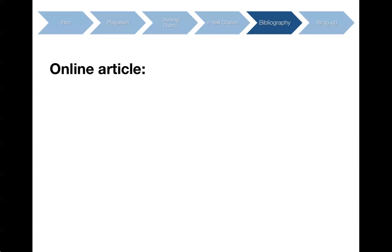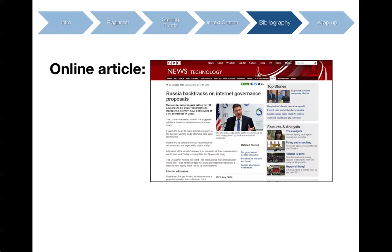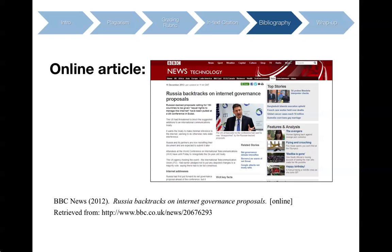Now let's look at online articles — this can be a news item, an op-ed, or an essay. Start with the name of the news organization, followed by the year the article was published in parentheses. Then the title of the article in italics, followed by the word '[Online]' in brackets, then 'Retrieved from:' followed by the link to the article, and the date you accessed it in brackets.